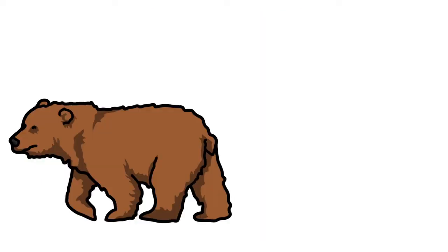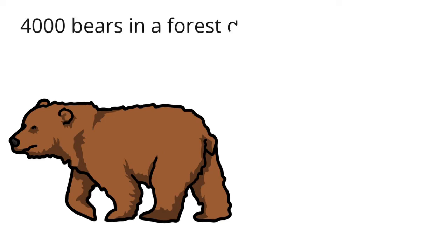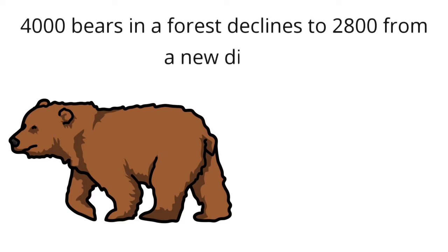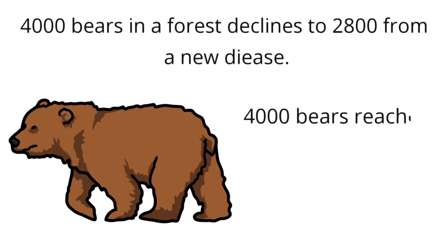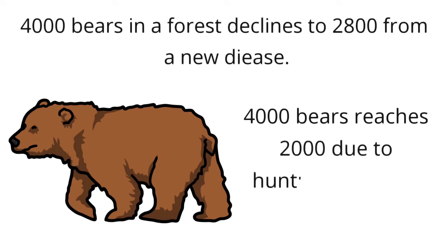For example, if there are 4,000 bears in a forest and the number declines to 2,800 from a new disease, the bears are vulnerable. A 50% decline in a species population from a known cause also makes the species vulnerable. For example, if the population of the 4,000 bears reaches 2,000 due to hunting activities, then the bears are vulnerable.